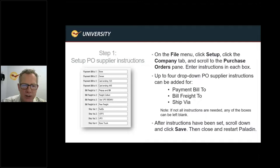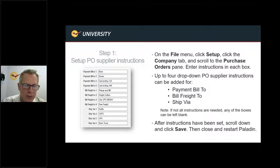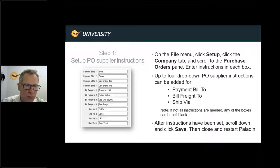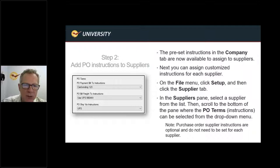Step one: set up PO supplier instructions. Under the file menu, click Setup and go to the Company tab in your Paladin application. Scroll to the Purchase Order pane, which is about three quarters of the way down. You're going to see a box with four different payment bill-tos, four different bill freight-tos, and four different ship vias. Put all the ones in here that might be applicable to your business — if you only want one line of each, that's fine, you can leave the others blank. After the instructions have been set, scroll to the bottom, click Save, and then restart Paladin.